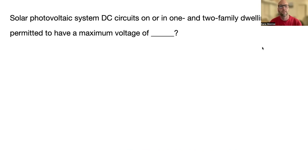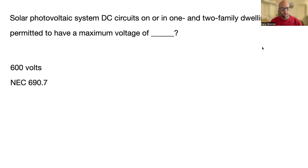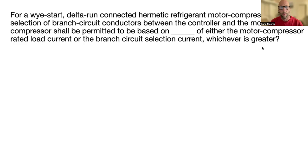Solar photovoltaic systems — DC circuits on or in one or two family dwellings shall be permitted to have a maximum voltage of 600 volts. That's NEC 690.7.